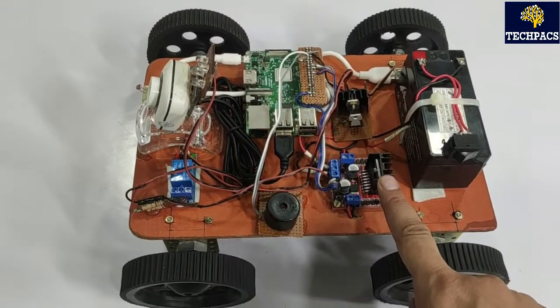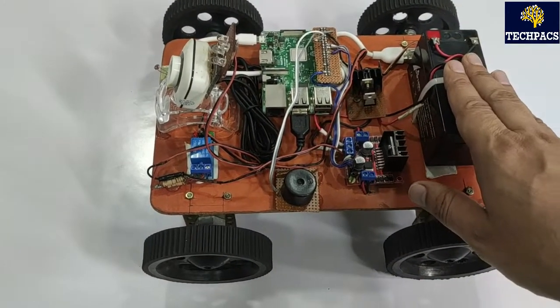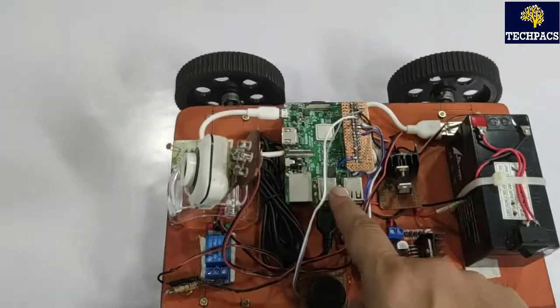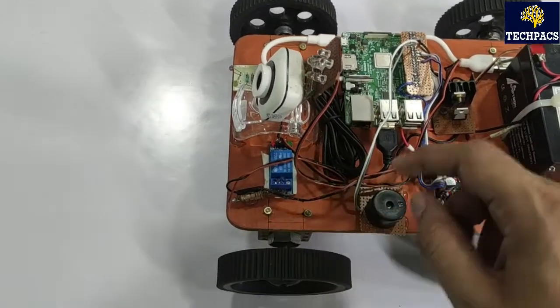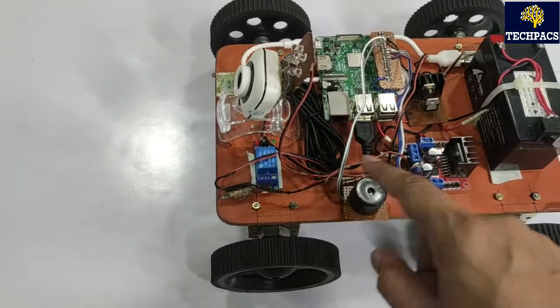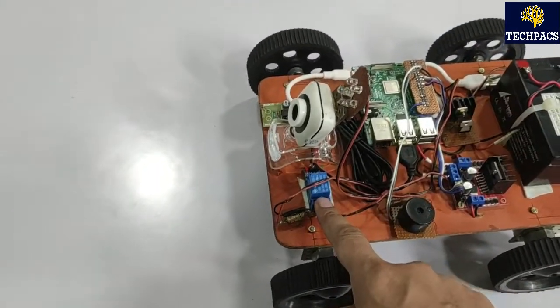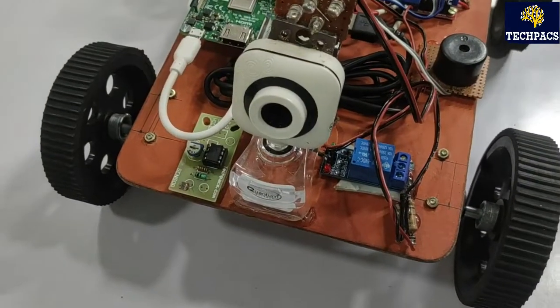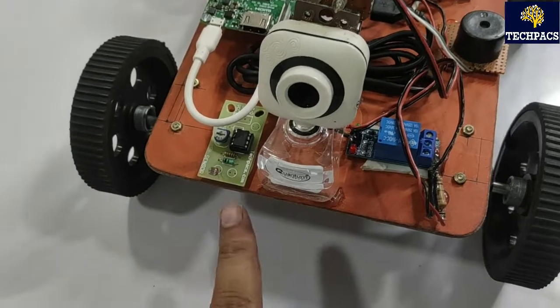We have used one motor driver circuit that is getting input from the battery as well as commands from the controller. This is the Raspberry Pi 3 board on which we have mounted the camera as well as a relay which is controlled by the Raspberry Pi. This relay is basically for the LEDs which operate when there is night or dark conditions.